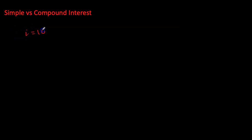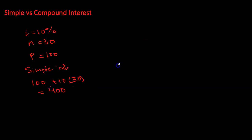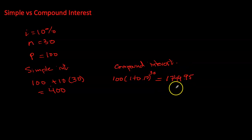With 10% interest over 30 years on a $100 principal: simple interest gives $100 + (10 × 30) = $400. Compound interest gives $100 × (1.10)^30 ≈ $1,744.94. You can see the principal has grown to a much larger value when interest is compounded annually, and the longer the time period, the greater this difference.